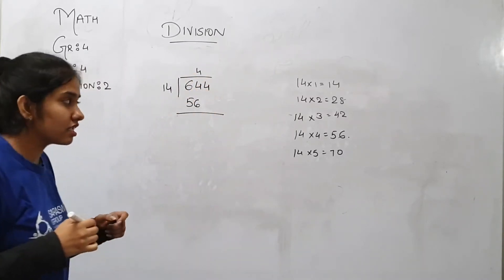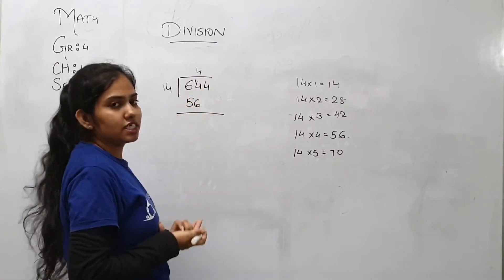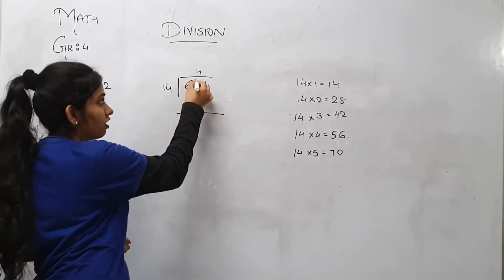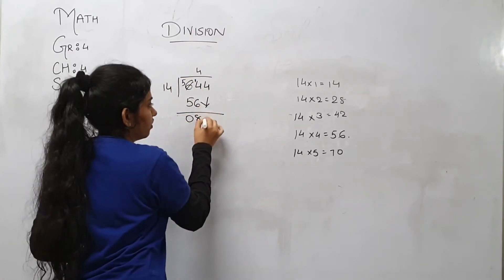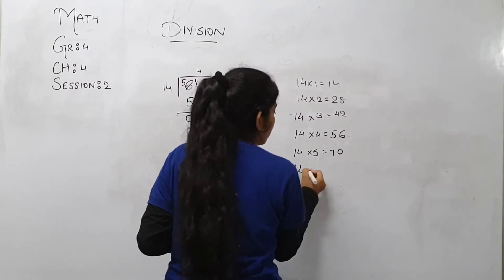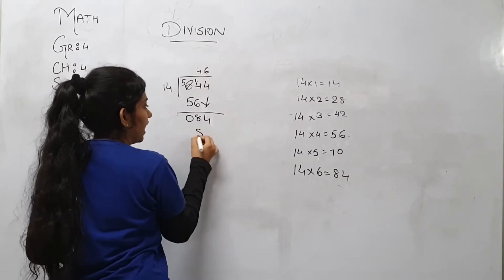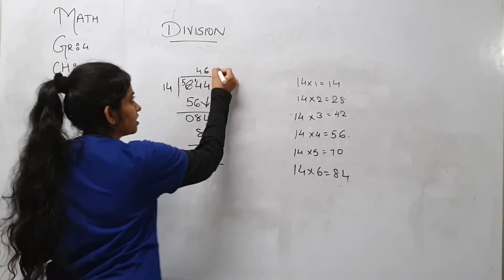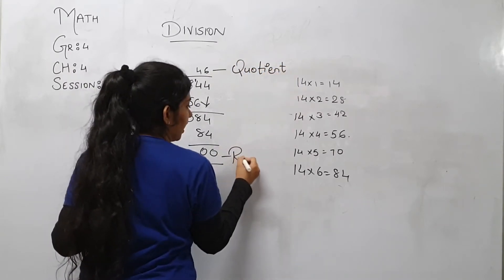So now we have to minus this. 4 minus 6 is not possible, so 1 carry forward. So 14 minus 6, counting up: 8, 9, 10, 11, 12, 14, 18. We carry forward, cut 6 and write 5. So our answer will be 0. Now 4 we carry down. Now 14, how much is 84? 14 sixes are 84. So the answer is 0. So we got the quotient.